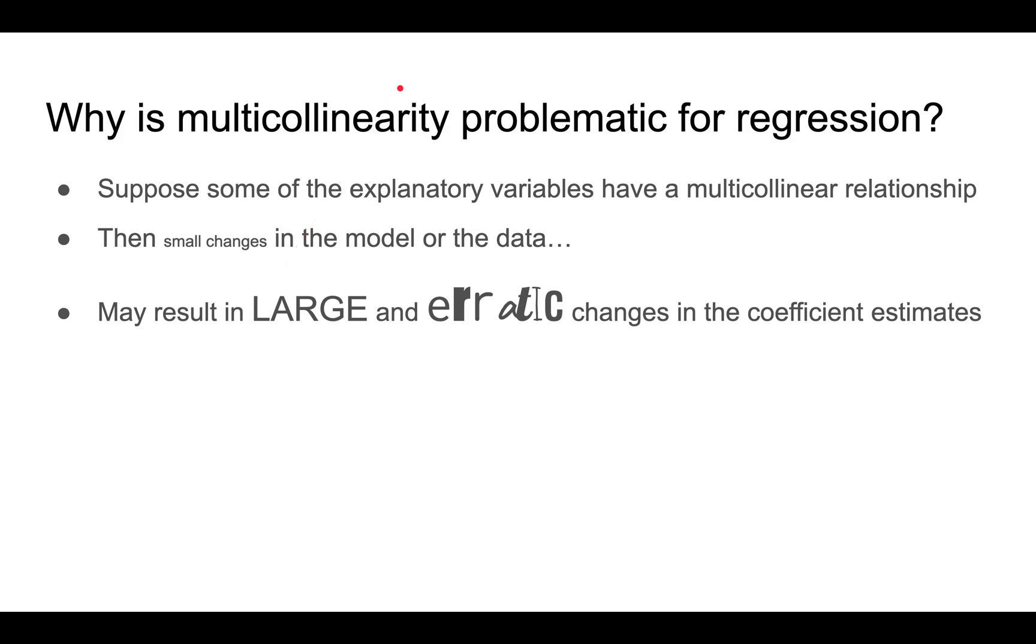Multicollinearity is problematic when you do linear or logistic or other regressions. The reason for this is that when you have small changes in the model or in the data, you can see very large and erratic changes in the coefficients, the estimated coefficients.